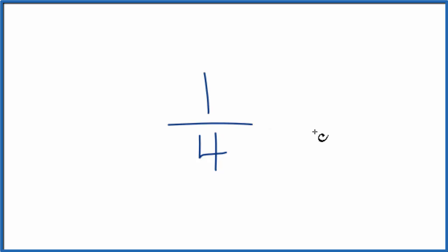So we could multiply this by one, and it would still be one-fourth. But instead of one, I'm going to write two over two. So two over two, that's the same as one. Two divided by two equals one.